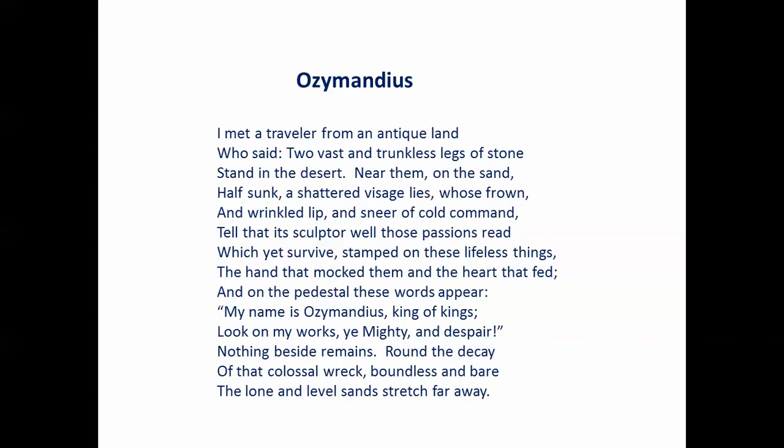So what do we learn from this octave? First, the speaker has met a traveler. It is worth noting that the things described in this poem are not seen by the speaker firsthand — they are filtered through the traveler. Now where had the traveler been? No location is given. However, we know he comes from an antique land. It would make sense to assume it might be somewhere in the Middle East — Egypt, present-day Iraq or Iran.